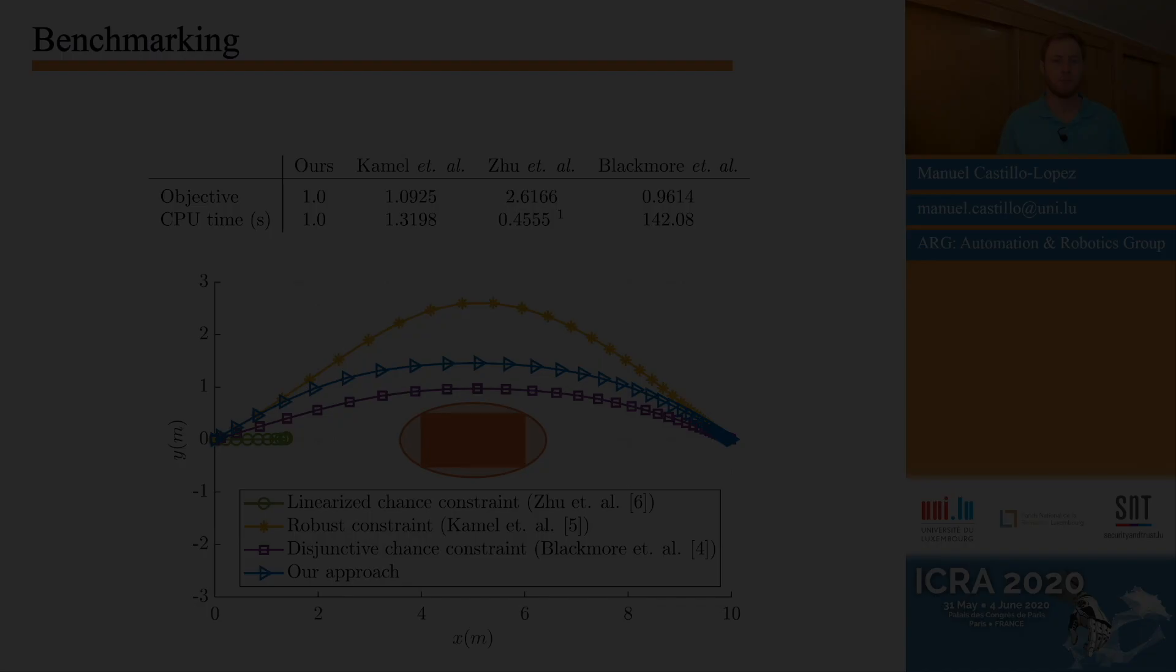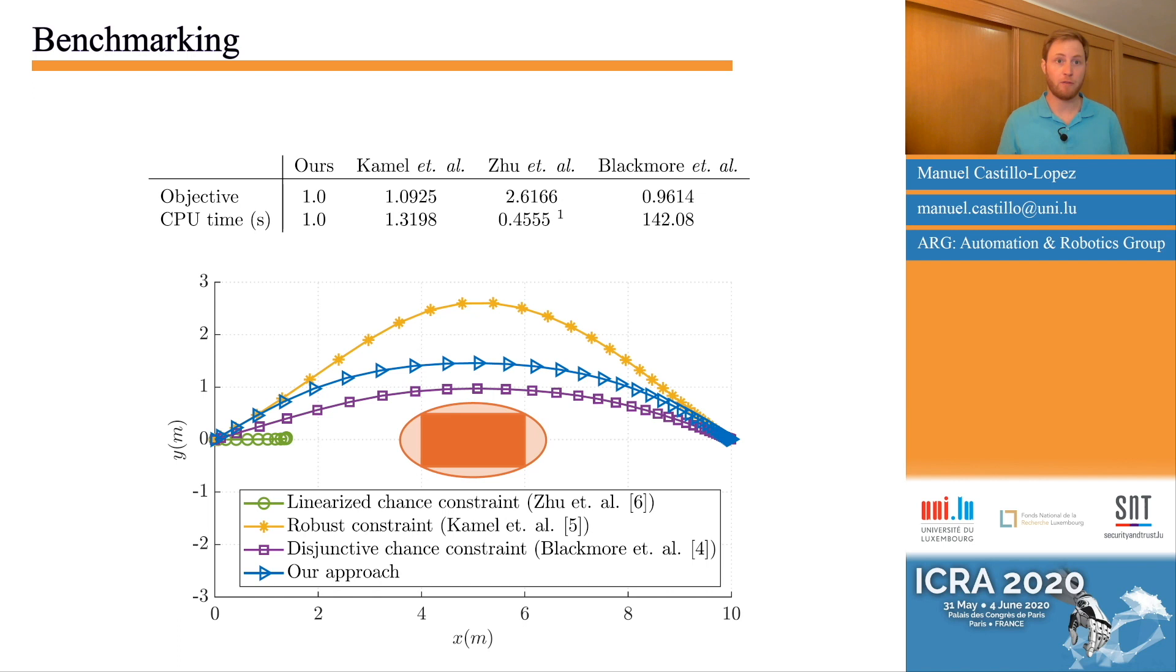Now, we move into the experimental validation of our approach. We designed three experiments on an aerial robot to avoid obstacles with model predictive control. In the first experiment, we designed a one obstacle motion planning benchmark with three state-of-the-art approaches: the combinatorial approach of Blackmore et al., the linearization approach of Zhu and Alonso-Mora, and the robust approach of Kamel et al.